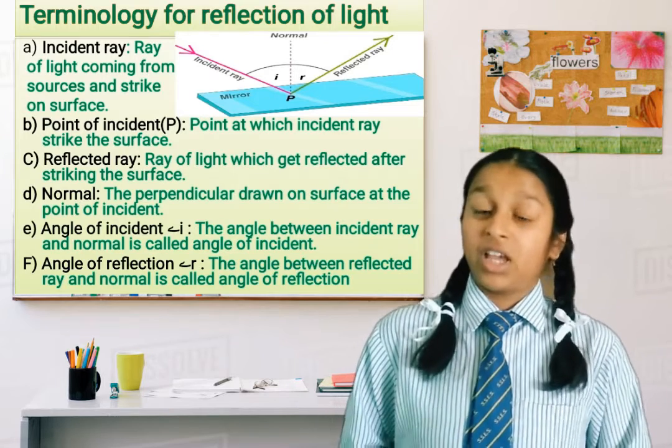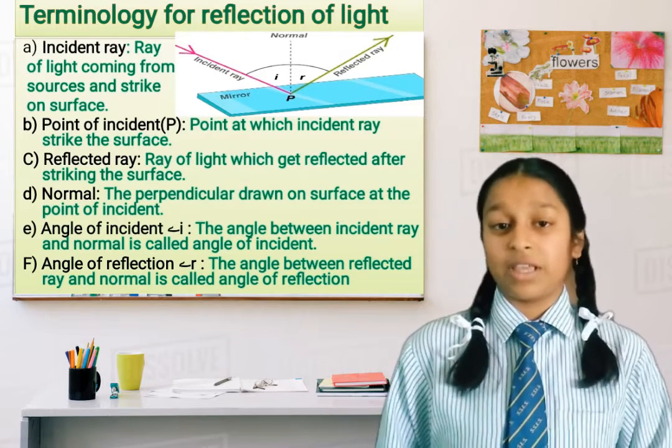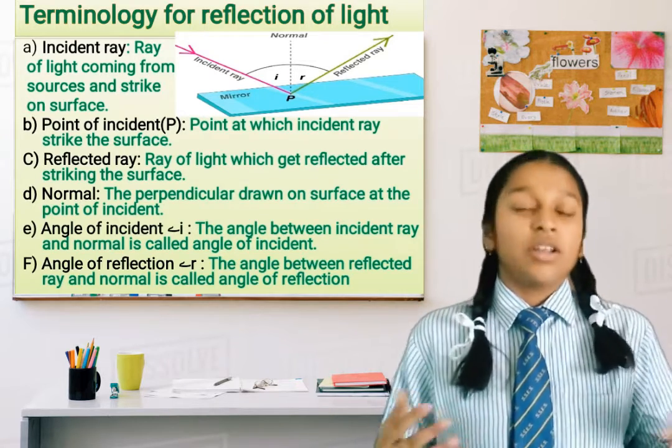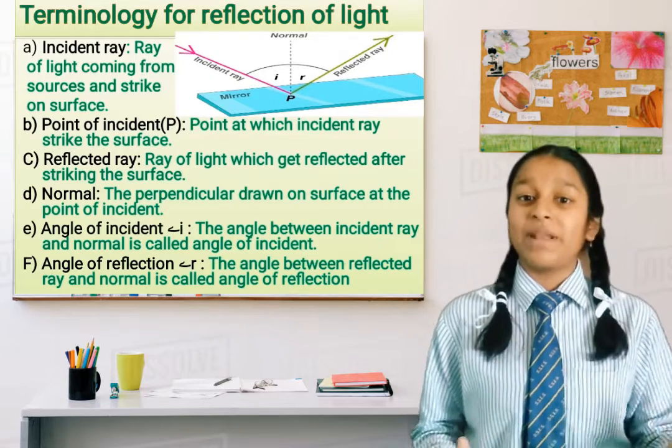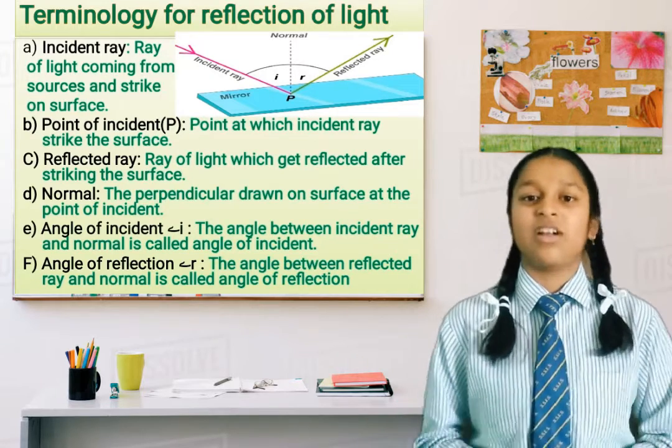Third is reflected ray: the ray of light which gets reflected after striking the surface. Normal: the perpendicular drawn on the surface at the point of incidence.